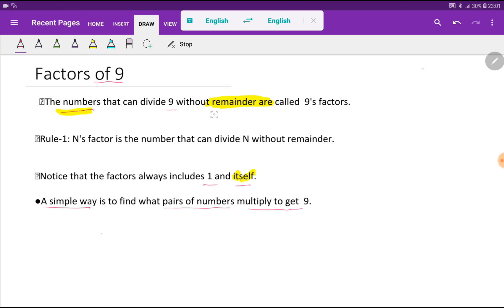Here is the general rule: N's factor is the number that can divide N without remainder. Notice that the factors always include 1 and itself.